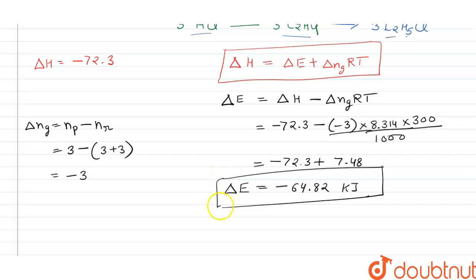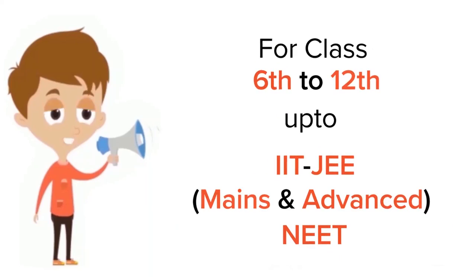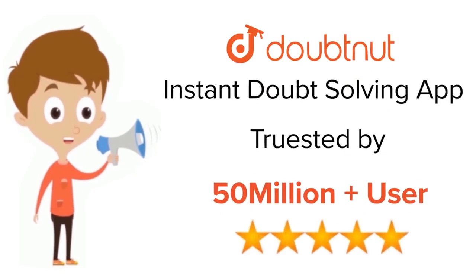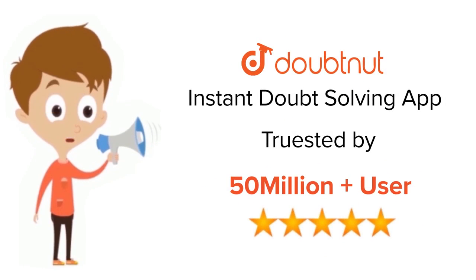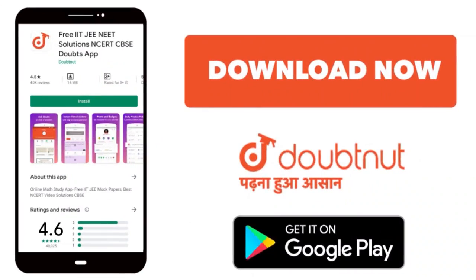Looking at the given options, option A shows the same value, so this is our correct answer. For class 6 to 12, IIT-JEE and NEET level — trusted by more than 5 crore students. Download Doubtnut today.